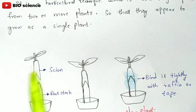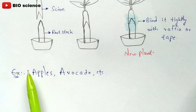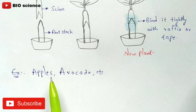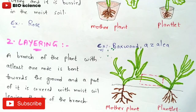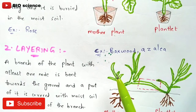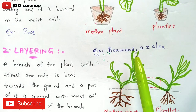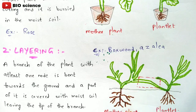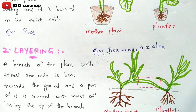The best examples of grafting are apples and avocado, and the best examples of layering are boxwood and azalea. That covers natural vegetative propagation and artificial vegetative propagation. If you like this explanation, please like and share the video with your friends, subscribe to the channel, and press the bell icon for the latest updates.